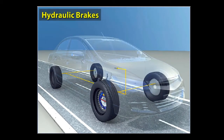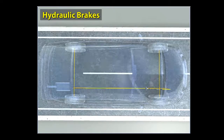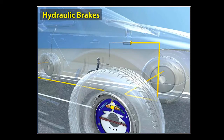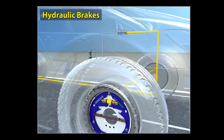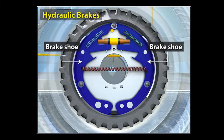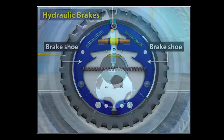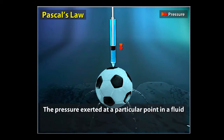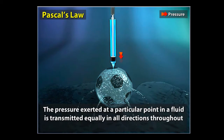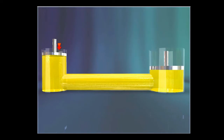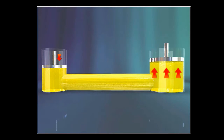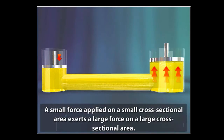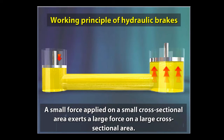Most cars have a hydraulic braking system, or hydraulic brakes. A hydraulic brake is a system of braking mechanism that uses a hydraulic fluid called brake fluid to apply pressure on the brake shoes. It works on the principle of Pascal's law, which states that the pressure exerted at a particular point in a fluid is transmitted equally in all directions throughout the fluid. This means that a small force applied on a small cross-sectional area exerts a large force on a large cross-sectional area. Pascal's law forms the working principle of all hydraulic machines.